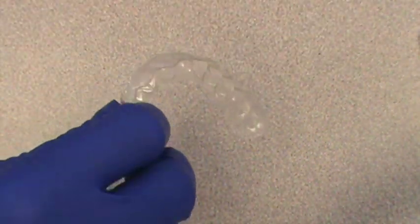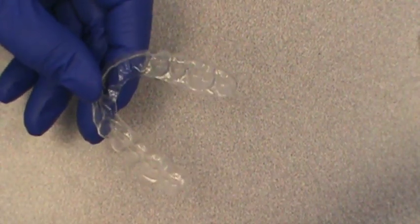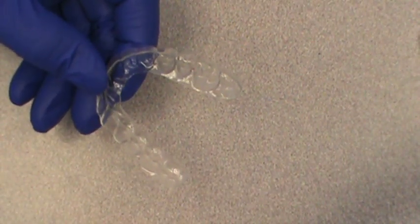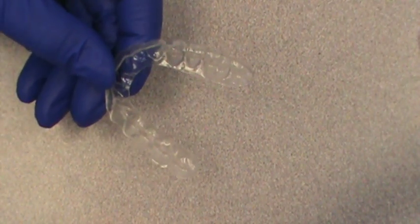These types of retainers require special cleaning and care as well. You can use special retainer cleaner that's been designed for these light plastics, or you can just use a toothbrush and regular water.